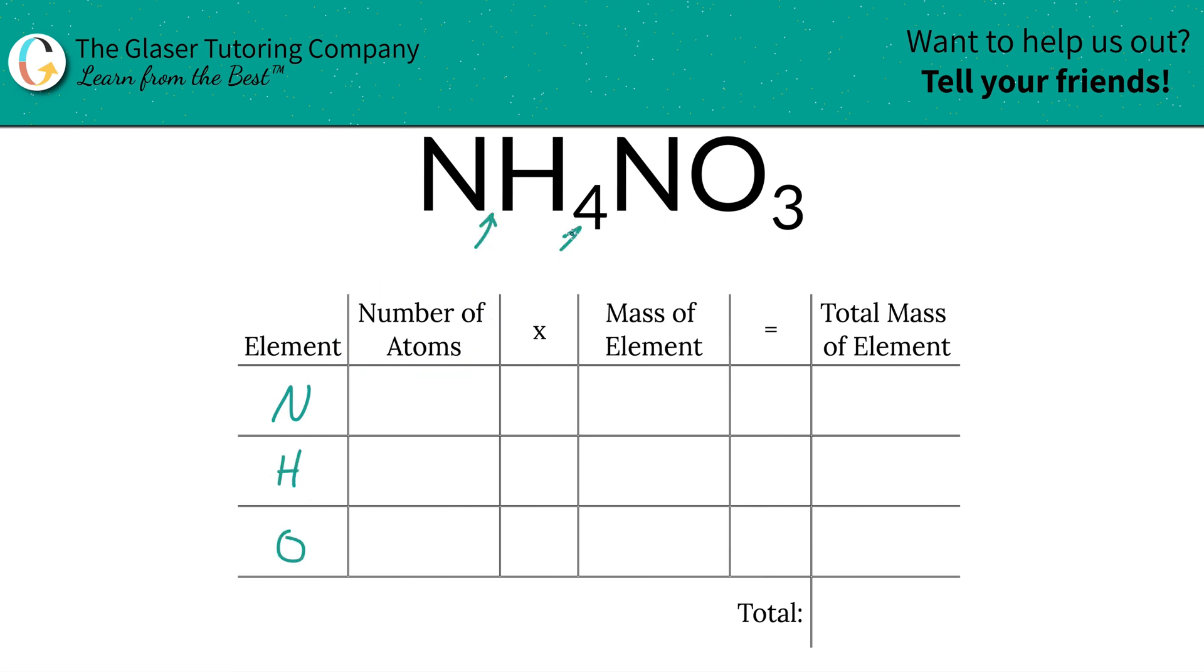Next is to identify the number of atoms of each, and that's where the subscripts come into play. For nitrogen, if you don't see a subscript, just put in a one. So we have one nitrogen here and one nitrogen there. In total, there's going to be two nitrogens.